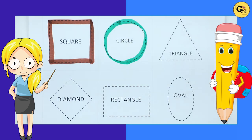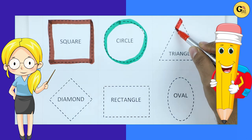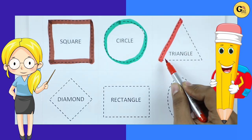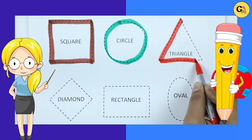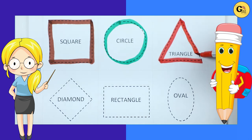Triangle. We make triangle shape with red color. It's triangle.